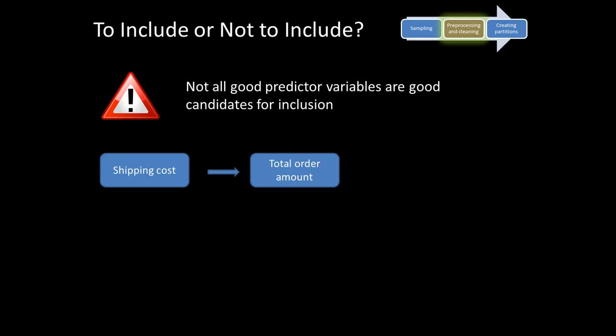Well, it doesn't look like a good candidate to include in a predictive model, because in a predictive model what you're trying to do is predict the total order amount for future cases. It's unlikely that for those future cases you're going to have the shipping cost — if you had it, you would also have the total order amount and wouldn't need to predict it. So there are some predictor variables available in historical data but unavailable in future data. Therefore, not all predictive variables are actually good candidates for inclusion.